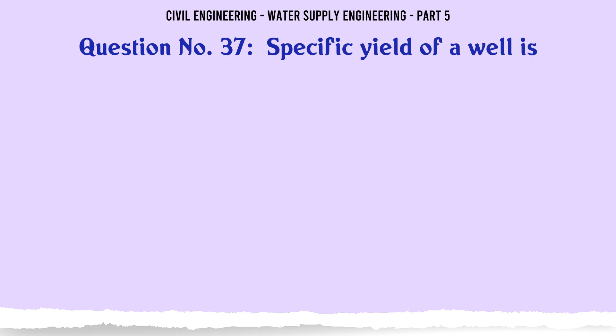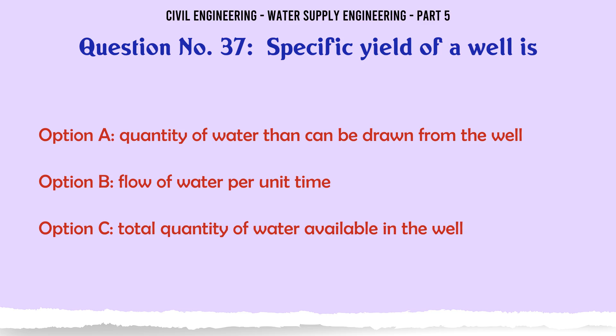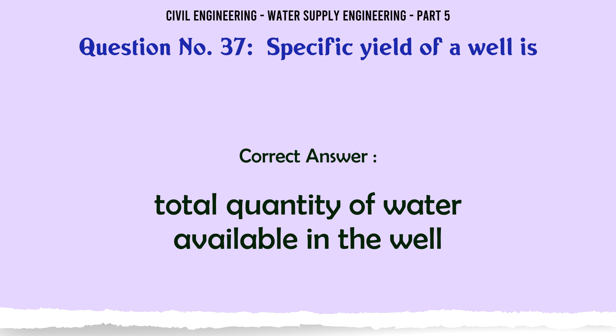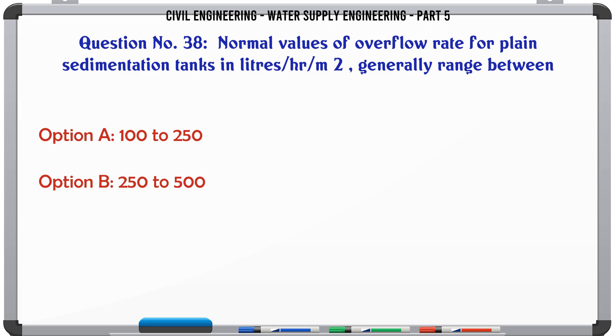Specific yield of a well is: A. Quantity of water that can be drawn from the well; B. Flow of water per unit time; C. Total quantity of water available in the well; D. Quantity of water per unit time per unit drawdown. The correct answer is: Total quantity of water available in the well.